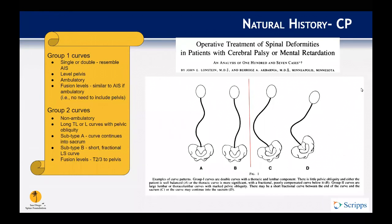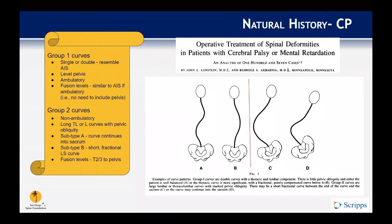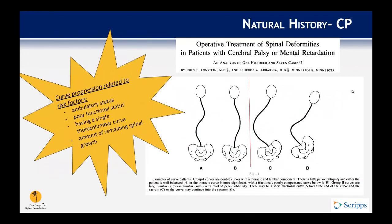A classic paper by Dr. Akhbarnia and Dr. Lonstein classified cerebral palsy scoliosis into two main groups. Group 1 patients have single or double curves with a level pelvis, more like adolescent idiopathic scoliosis, and fusing to the lower lumbar spine — L4 or L5 — is often adequate. Group 2 patients have much more severe curvatures and pelvic obliquity, often requiring fusion from T2 or T3 to the pelvis. Curve progression was related to ambulatory status, poor functional status, single thoracolumbar curve, and remaining growth.